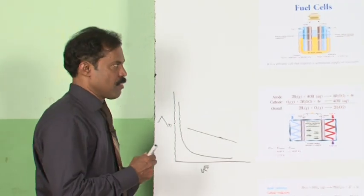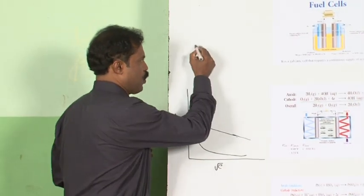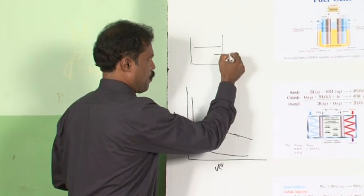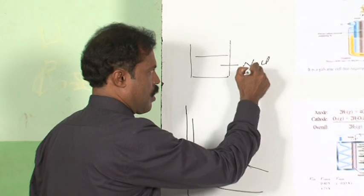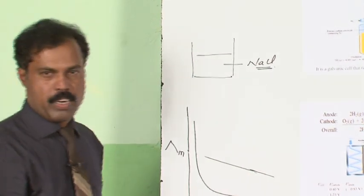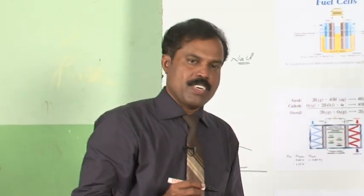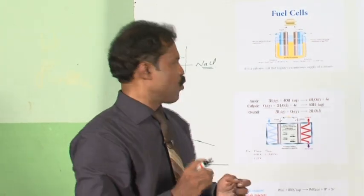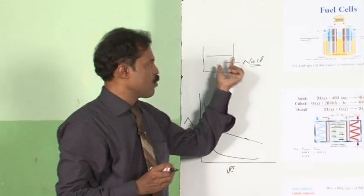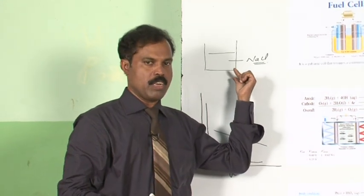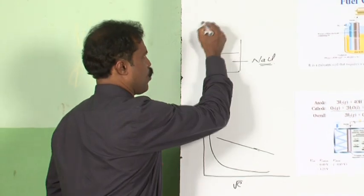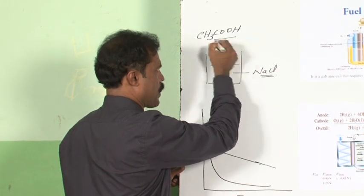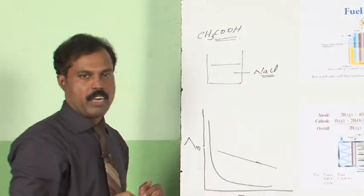Let us consider a solution of a strong electrolyte, say for example, sodium chloride. You know why it is called a strong electrolyte? The electrolytes which dissociate completely in solution are strong electrolytes. So sodium chloride is a strong electrolyte because in solution it dissociates completely. Whereas acetic acid, being a substance which dissociates only partially, we call it a weak electrolyte.